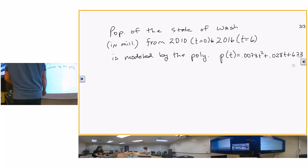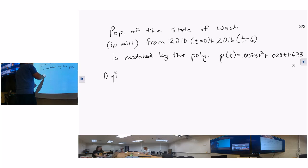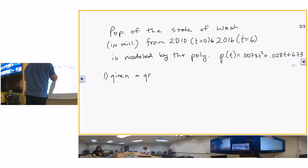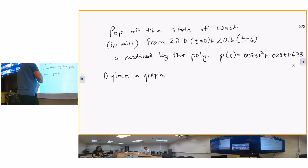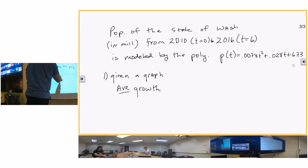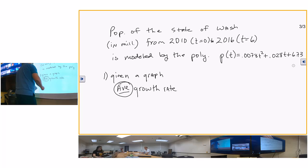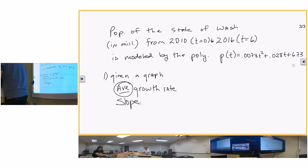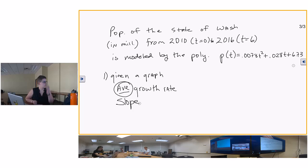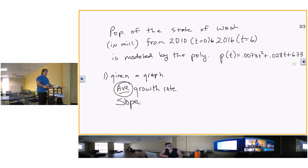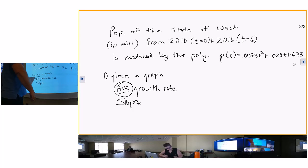Now they're going to give you a graph. They're going to ask you to find the average growth rate. Right now, what did I tell you? Average, average growth, average speed - what is that a 25 cent word for? The slope. So this is just algebra.